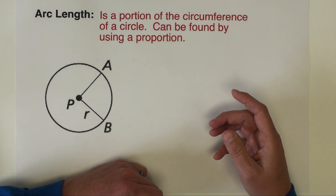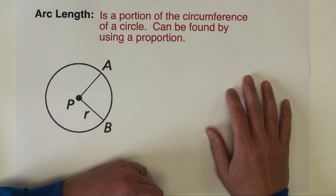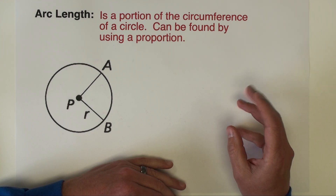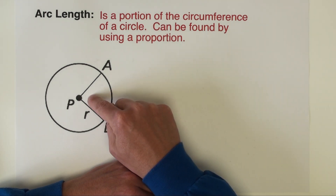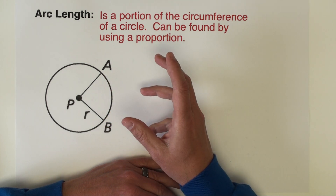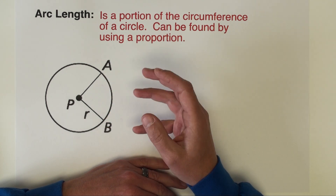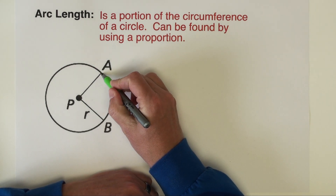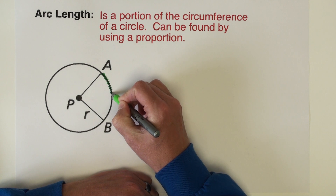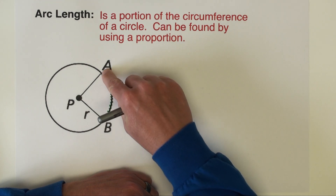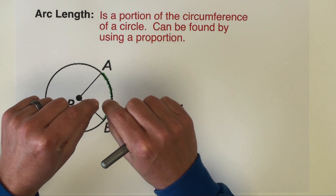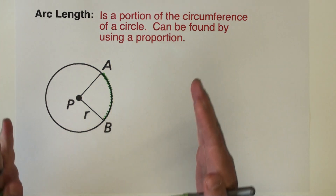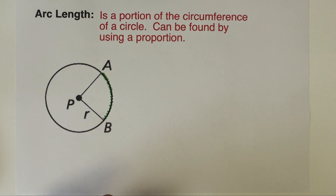Next we're going to talk about arc length. We've previously discussed arcs and the measure of an arc, which is equivalent to the central angle that intercepts that arc. Arc length is much more related to circumference — it is a portion of the circumference. If I want to know the length of arc AB, I want to know physically how long that arc is, as if I laid it flat along a ruler. This is different from the degree measure of the arc.